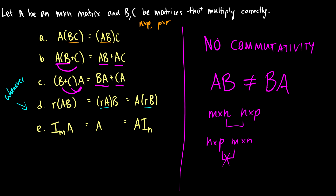If you take a scalar out of a matrix because the numbers get too large, you can put it back in whenever you want. The last property is that if you take the identity matrix and multiply it by some matrix, you just get that matrix back. If we take I_m times A, we get A back, which is the same as A times I_n. For an m by n matrix, if you multiply on the left it must be I_m; on the right it must be I_n.